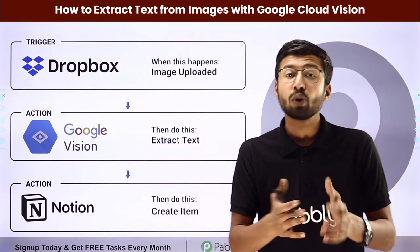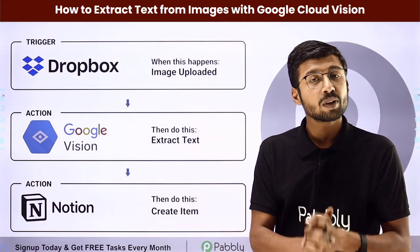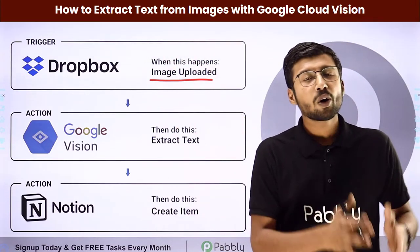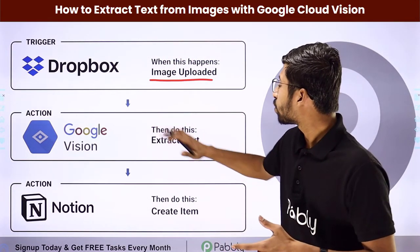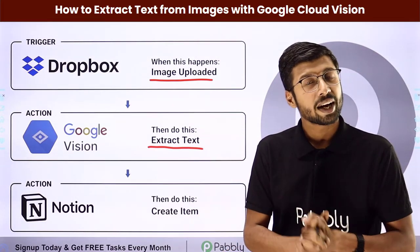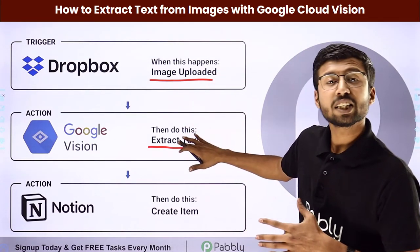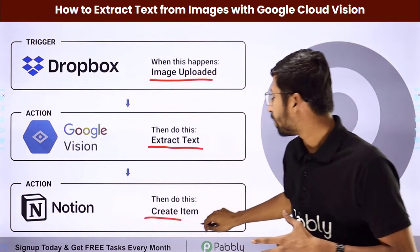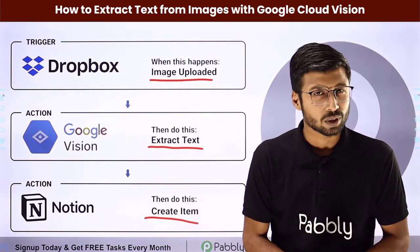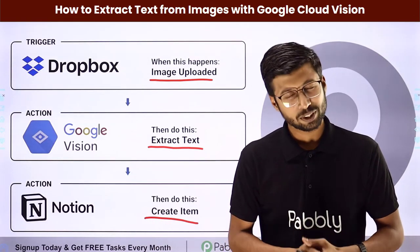For example, suppose you are adding images with some text into your Dropbox. Whenever you upload an image with some text in Dropbox, this automation will trigger and then using Google Cloud Vision, we are going to extract the text from that image. After extracting the text, we are going to add all the details of the image and the text into a Notion database as a new item. Instead of Notion, you can send the same data to some other application as well.